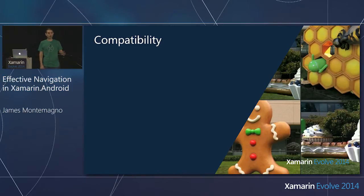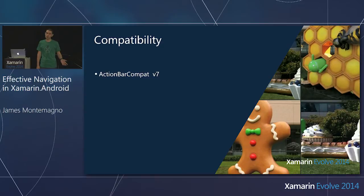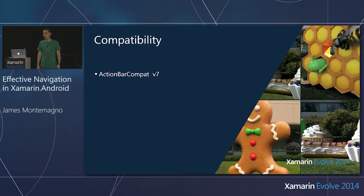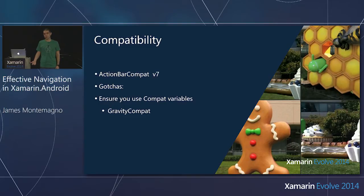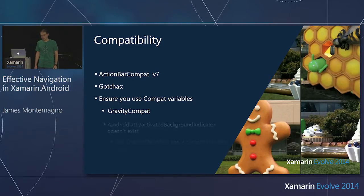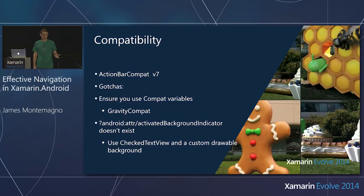Compatibility-wise, you can combine this with the action bar compatibility v7 framework. So if you do have to support Gingerbread, you can totally do it. I have a full example on my GitHub of how this works. A few gotchas: some variables were introduced in API level 11 that are not available in API 7, for instance gravity — use gravity compat instead. That fancy activated background indicator doesn't exist in v7, so you have to use a special checked text box with a custom drawable. Full sample on my GitHub.